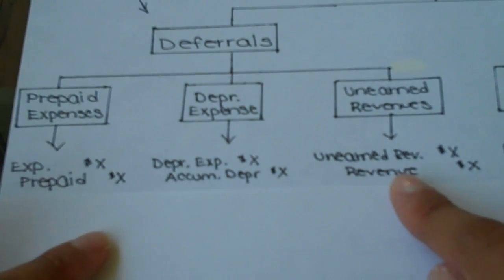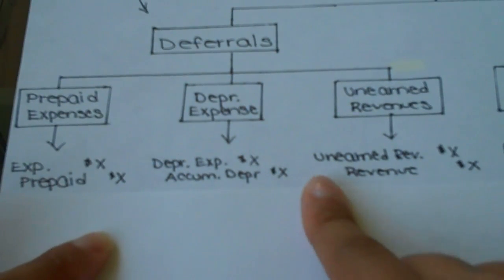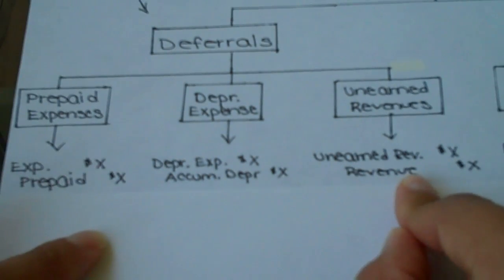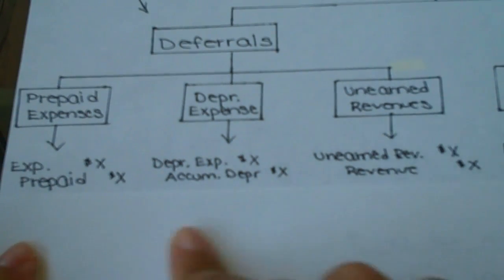And then finally we have the journal entry to record any unearned revenue that has now been earned. We decrease the liability with a debit and we increase revenue with a credit. So these are examples of the journal entries you would do at the end of the accounting period if a company had any of these types of items that need adjustments.